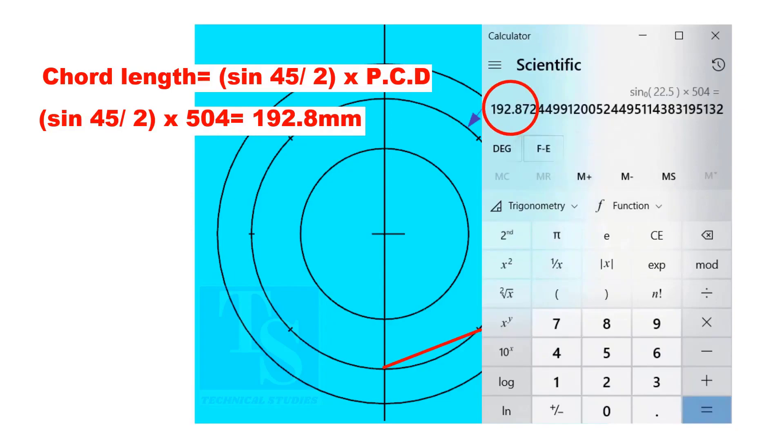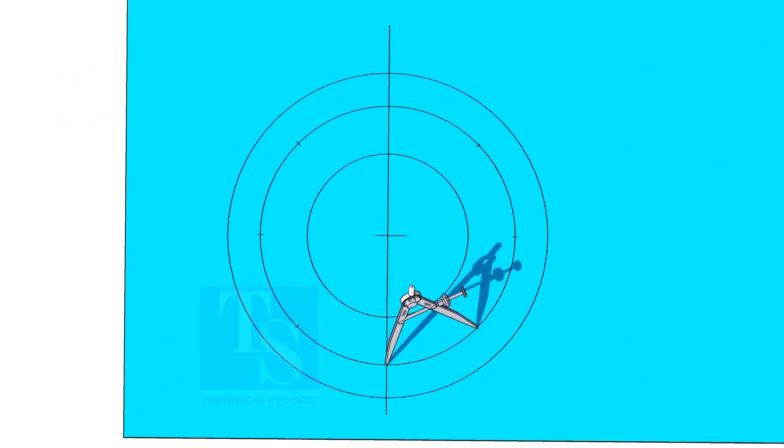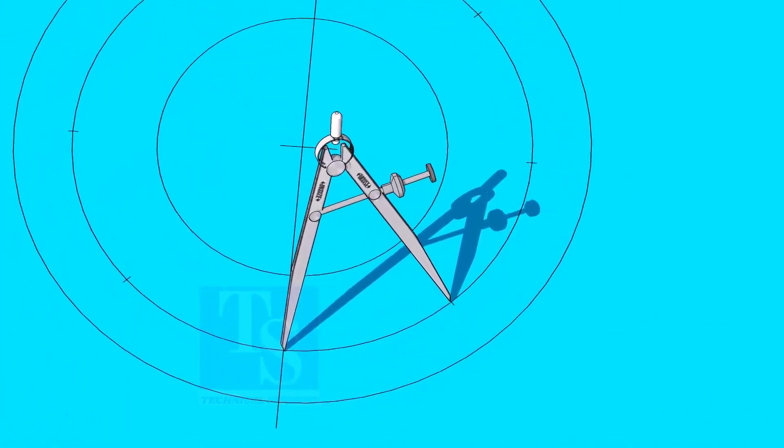The cord length is 192.8 millimeters. And divide the PCD into 8 parts.